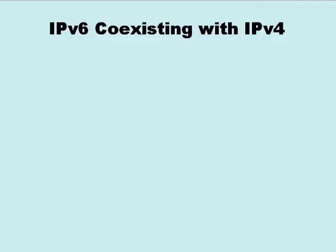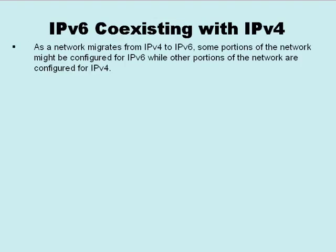In our previous lab, lab number 14, we configured OSPF version 3 as our routing protocol for IPv6 network traffic and had full reachability between all of our IPv6 networks. However, in the real world, as an enterprise is transitioning from an IPv4 network to an IPv6 network, there might be portions of the network at any given time that are still running IPv4.